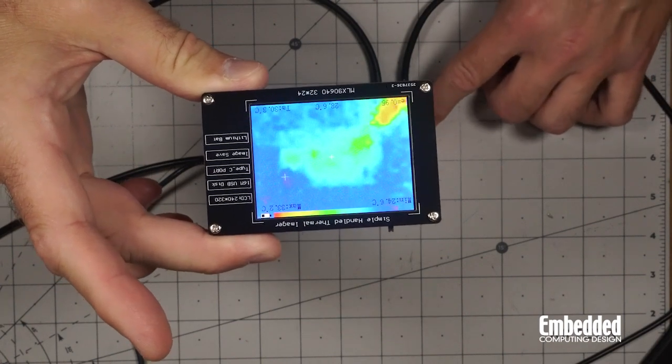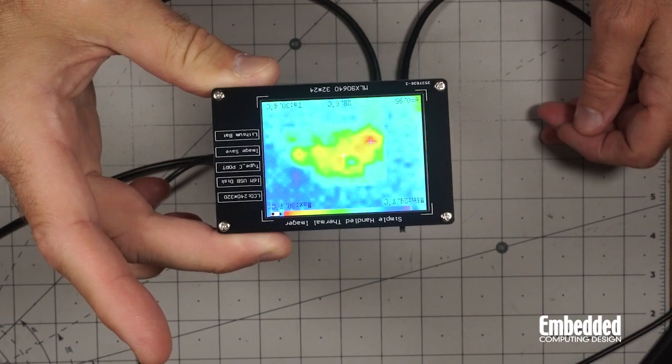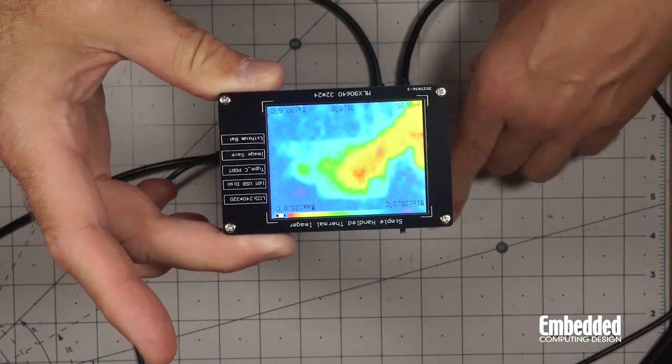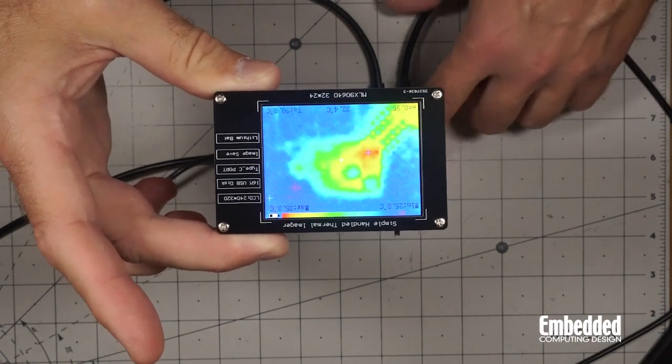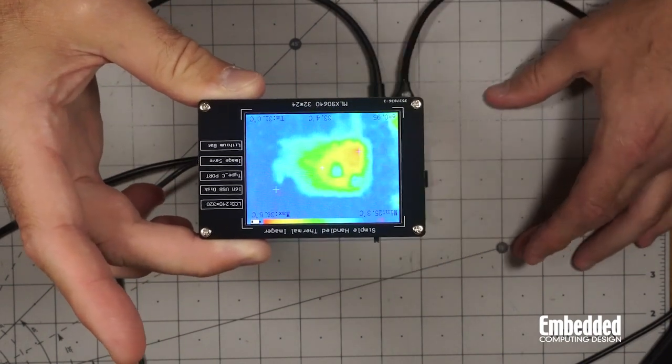You can see it getting hot just a little bit where the USB connection is, putting some power in there. Where the shield is actually appears fairly cool. A little surprising. Yeah you can definitely see where it's heating up around here. And you can kind of see the outline of the board now which is kind of neat.